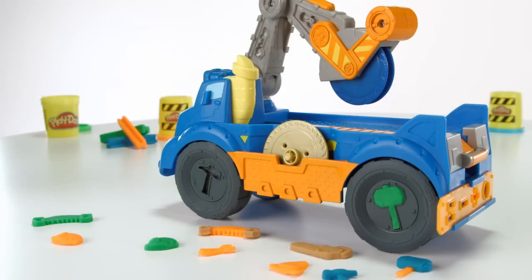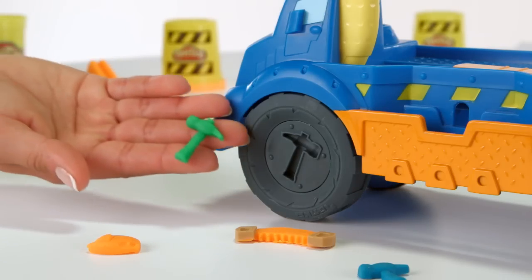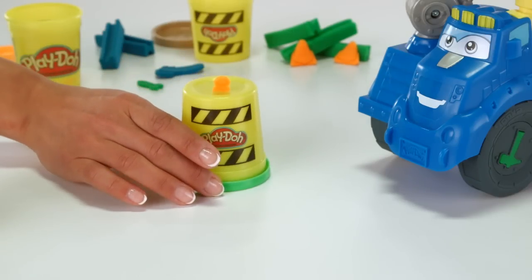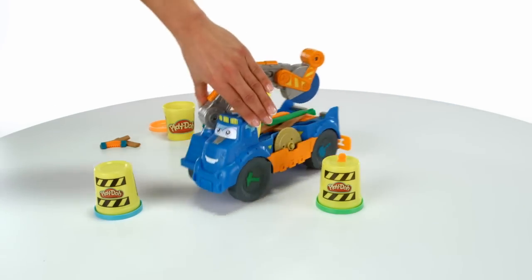Then build out the story by molding out hammers and saws. And you can use the cans from your Play-Doh modeling compound as construction road cones.